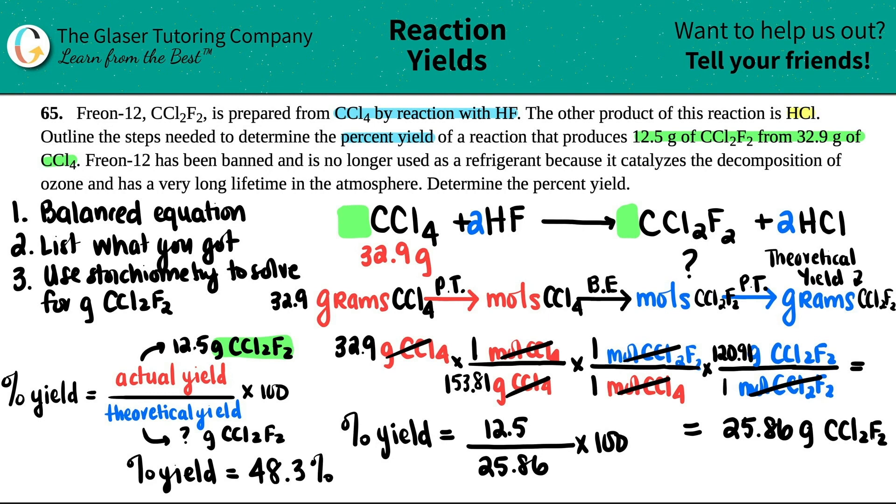So basically out of a hundred percent - that would have been matching the theoretical yield - because of error, they only got 48.3% of their product, which isn't too bad. I remember in my organic chemistry class I would be getting like 10% yields. Yeah, but I got an A. I got an A and that's all that matters. And before I go, I just want to say that number four to finish this, outlining the steps would be solve for percent yield and then you're done.